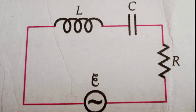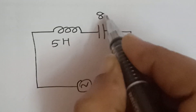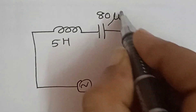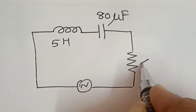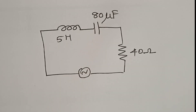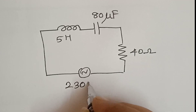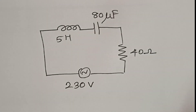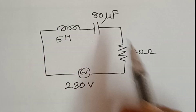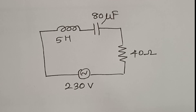So, what is the problem? The LCR circuit has L equal to 5 Henry, C equal to 80 microfarad, and R equal to 40 Ohm. The source is a 230V source. First, we determine the source frequency at resonance.